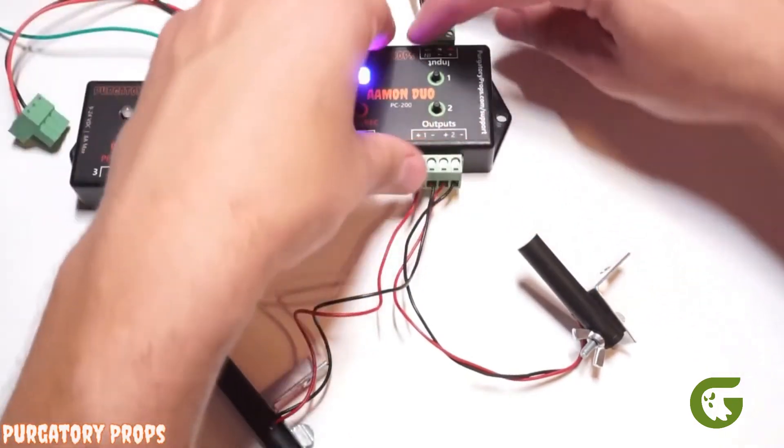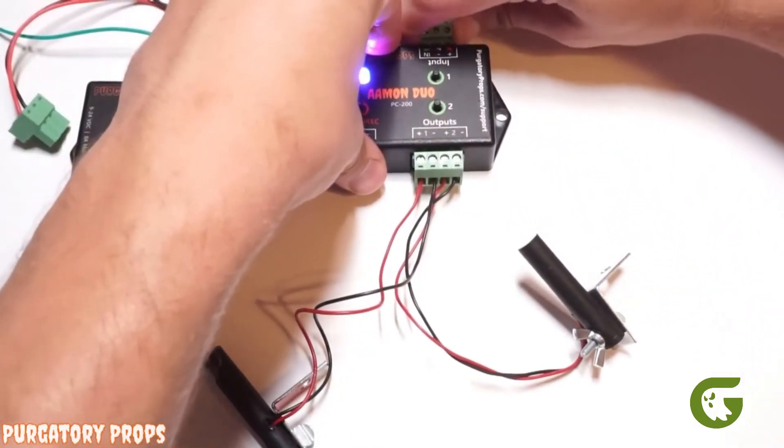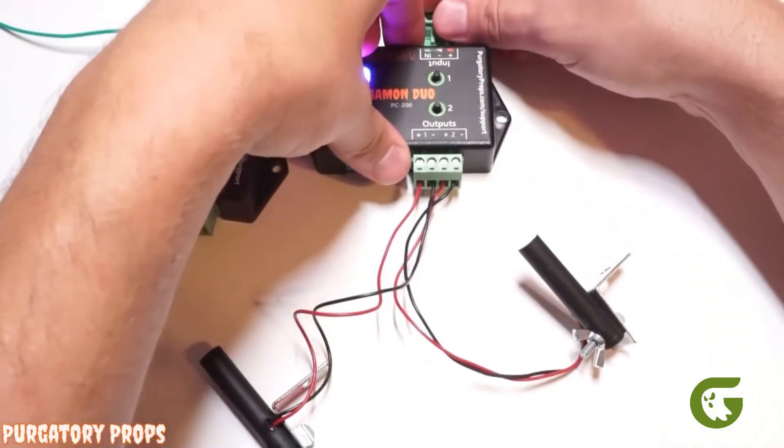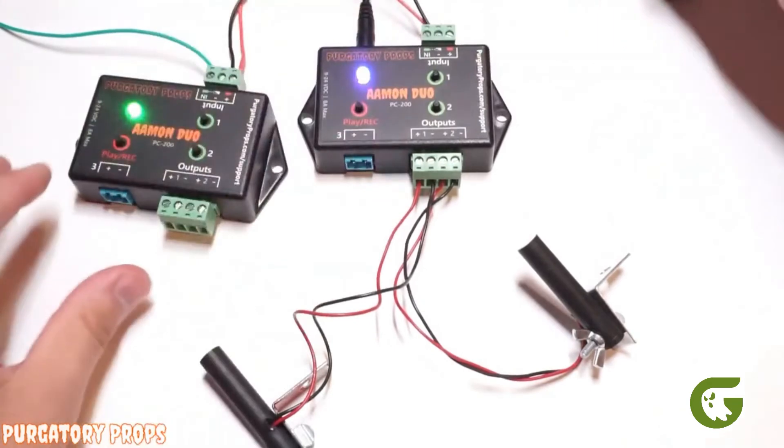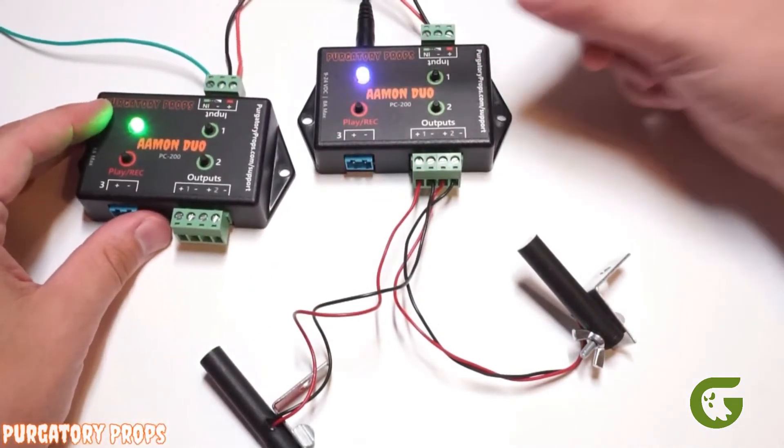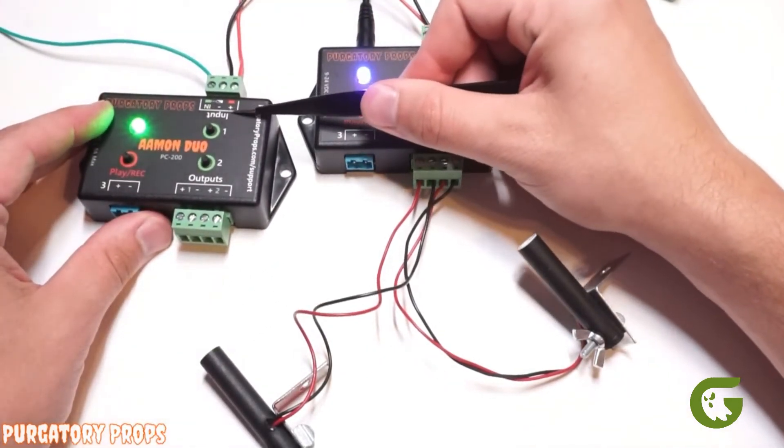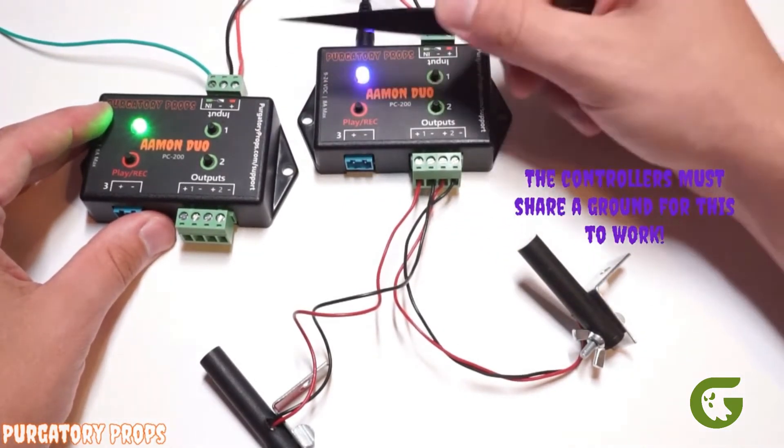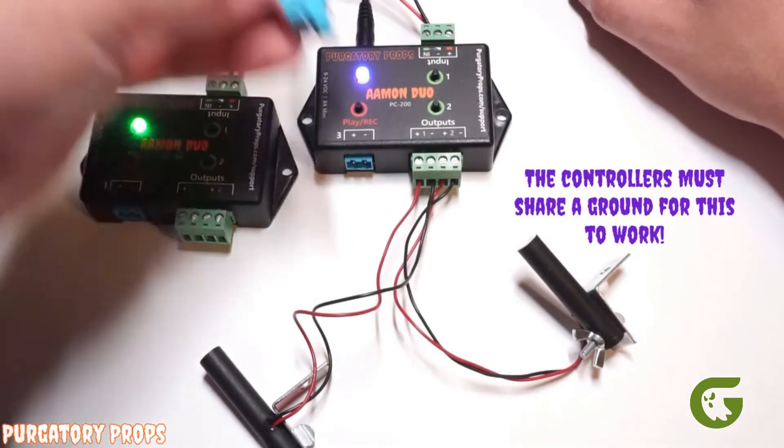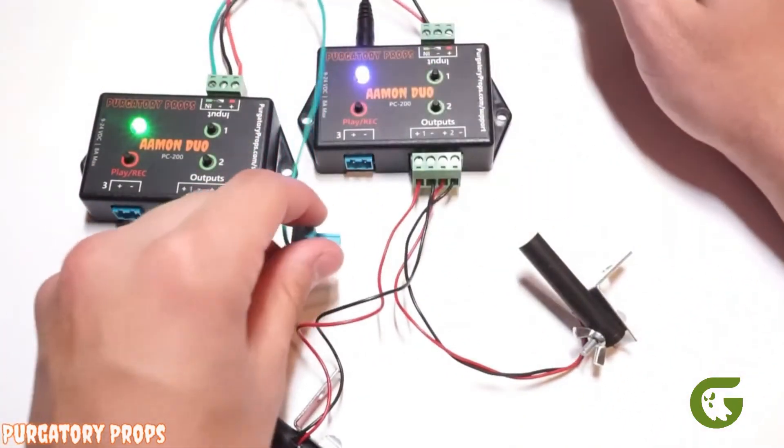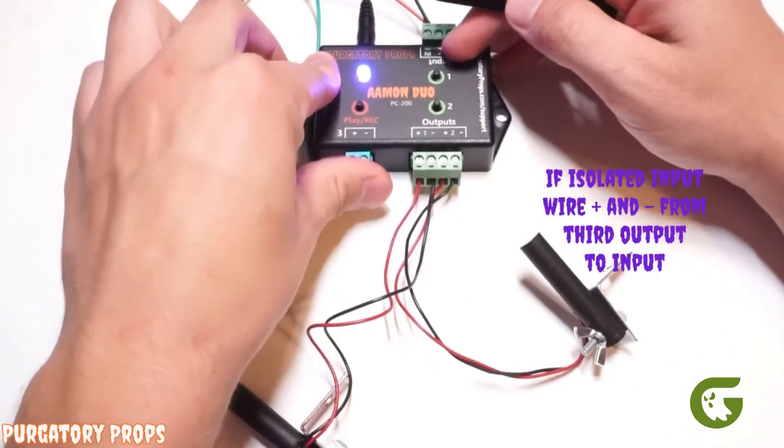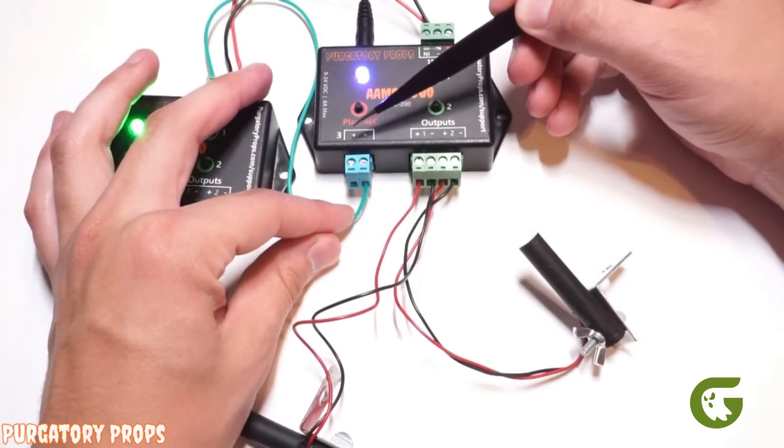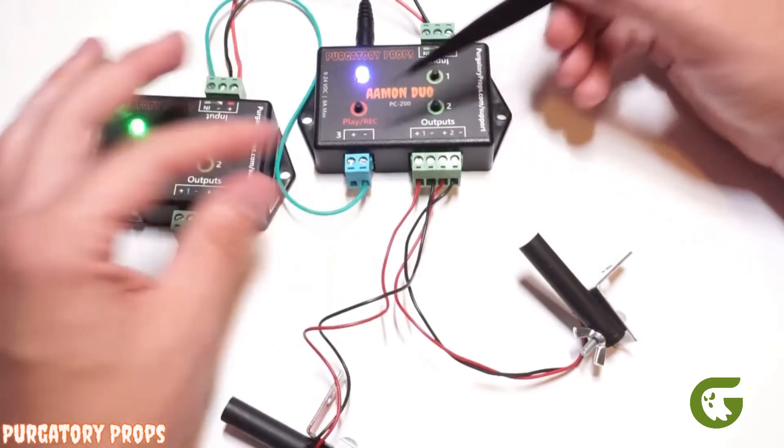So let's change this configuration up. What we're going to do is we're actually going to power this second Amon Duo off of this first one. So we're using the input terminals for power on this second one, and we're just positive to positive, negative to negative. Then the end on this second one, we're going to wire it up to the negative of the third output. That's important because this won't work if you wire it to the positive, it has to be to the negative.